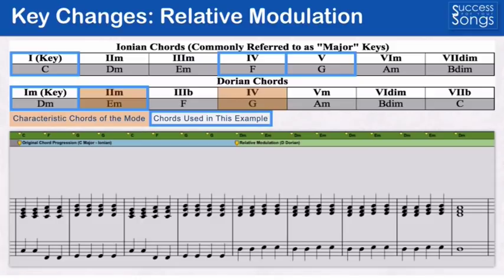Those Dorian chords of D minor and E minor in that second progression are also in our key of C Ionian, the original key. And that's what makes this a relative modulation. An important part of this kind of modulation is to firmly establish your tonic, which is why starting your chord progression with the root chord of that new key usually works well as we did in this example — and by making use of the characteristic Dorian chord of E minor during that progression. Using relative modulation in this way can be a good approach to use in the bridge of a song.